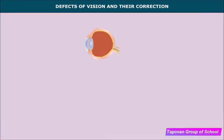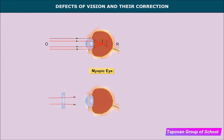In myopia, the person can see near objects but cannot see distant objects clearly, because the image is formed in front of the retina. Causes include excessive converging power of the eye lens, small focal length, excessive curvature, or an elongated eyeball. Correction: a concave or diverging lens diverges the parallel rays from distant objects before they reach the eye lens, allowing the image to form correctly on the retina. Myopia is corrected using a concave lens.